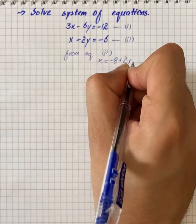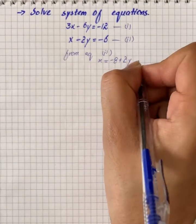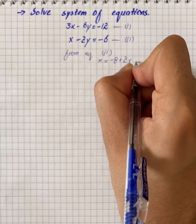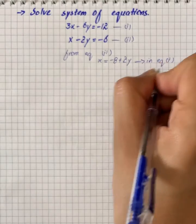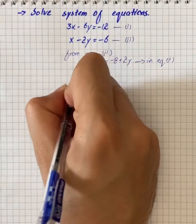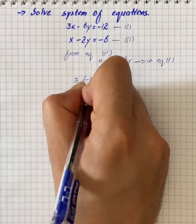We will substitute it in equation 1, so we have 3 into minus 8 plus 2y minus 6y is equal to minus 12.